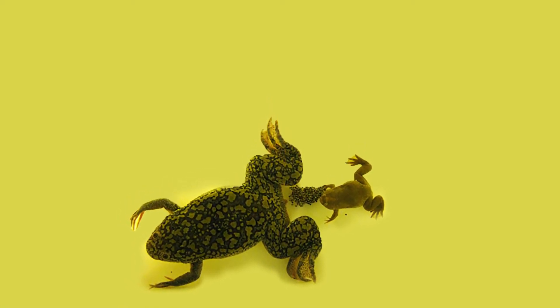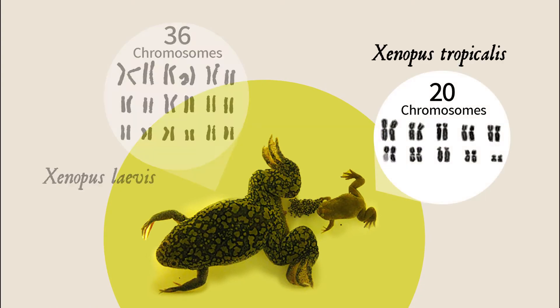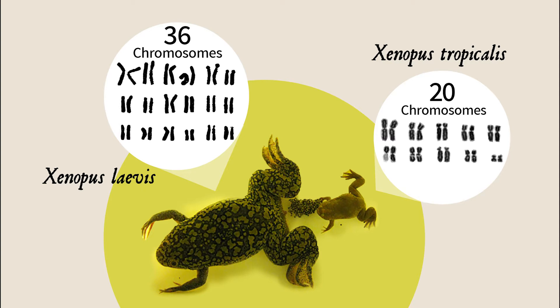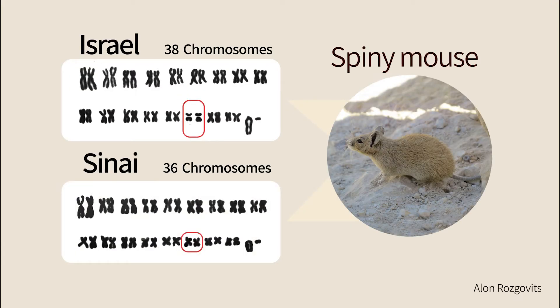Chromosomal changes are an effective way for generating a reproductive barrier. Genome duplication happened many times during evolution. For example, the Xenopus tropicalis toad has 20 chromosomes, while the Xenopus laevis toad was apparently generated by whole genome duplication and has 36 chromosomes. Chromosomes can also break into two smaller ones or translocate arms. In this karyotype, you can see the differences between a spiny mouse that lives in Israel and one that lives in Sinai — one has 18 and the other 19 chromosomes, showing that two new chromosomes were generated from one, or that one chromosome was formed by fusion of two.